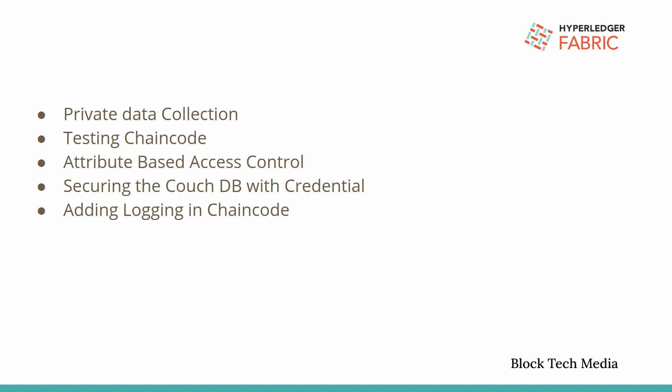In the next part we will be securing our CouchDB with credentials — that is a small part. In the next section we are going to add logging at the chain code level. We have a logger in the shim, and we will be implementing that logger in the chain code so that whatever operations happen at the chain code level will be logged to files. I will show you exactly how.